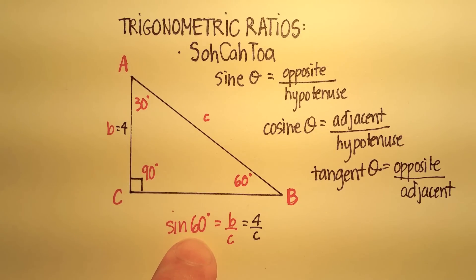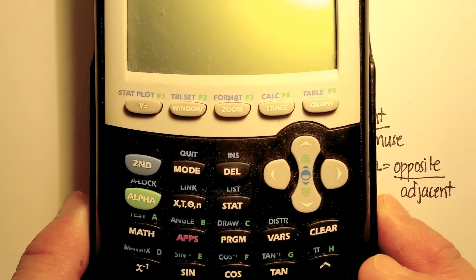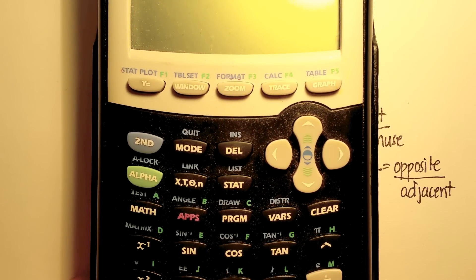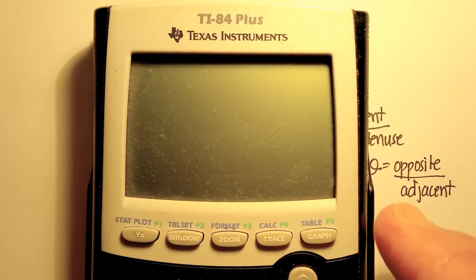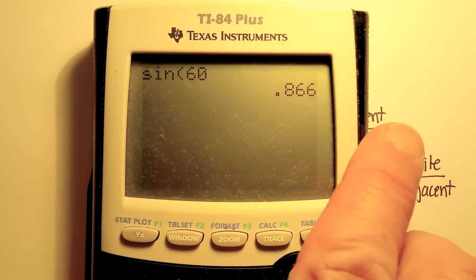Now what is the sine of 60 degrees? To do that, you just go to your calculator. And you'll notice on your calculator there is a button that's called sine. So you press, you punch in sine 60 degrees, and then you'd press enter, and you get 0.866.